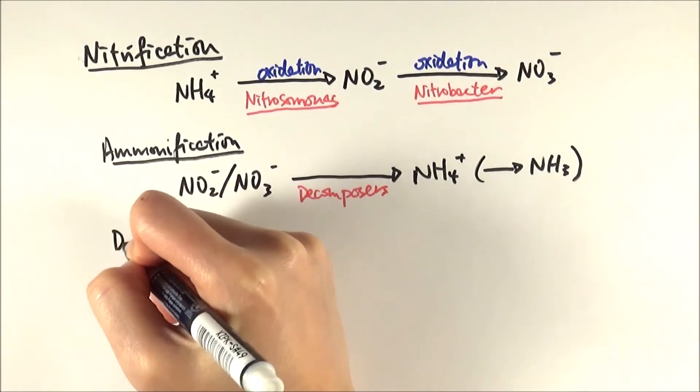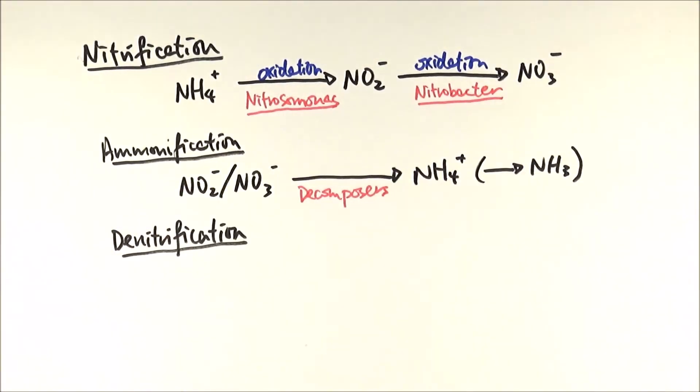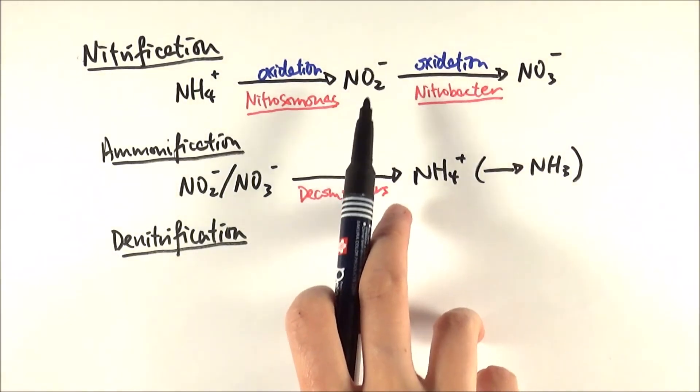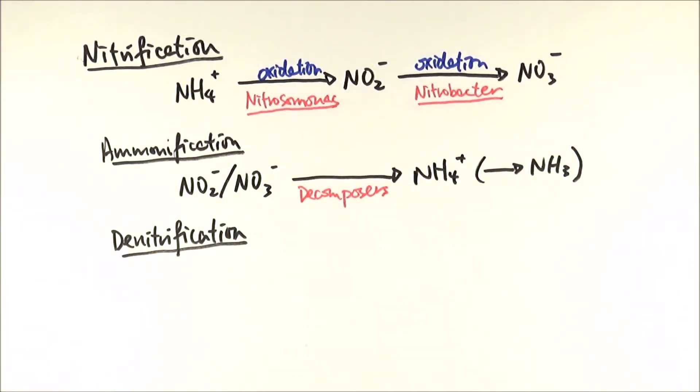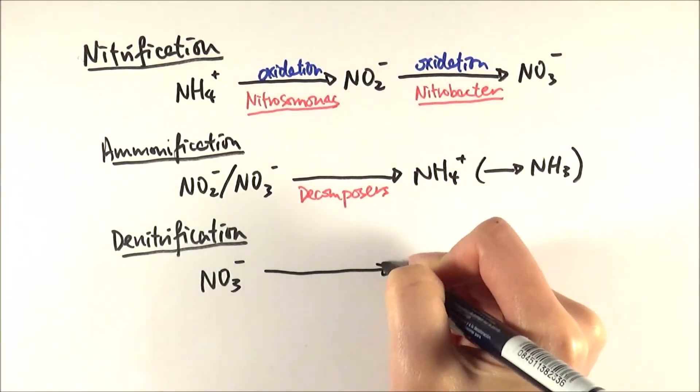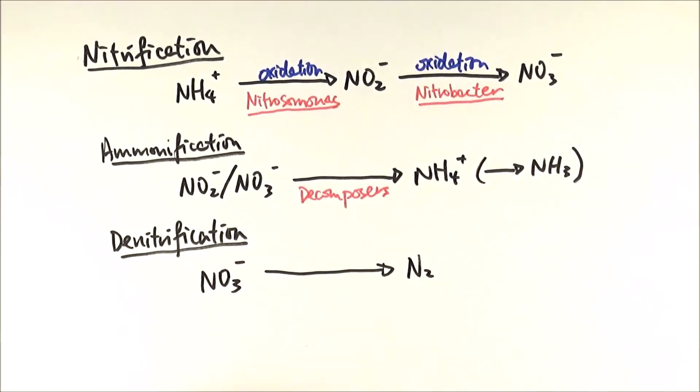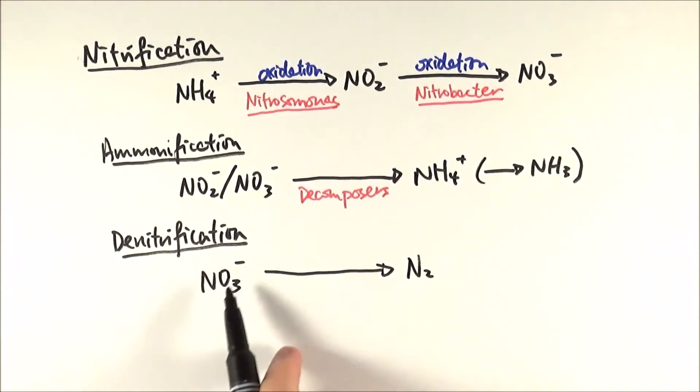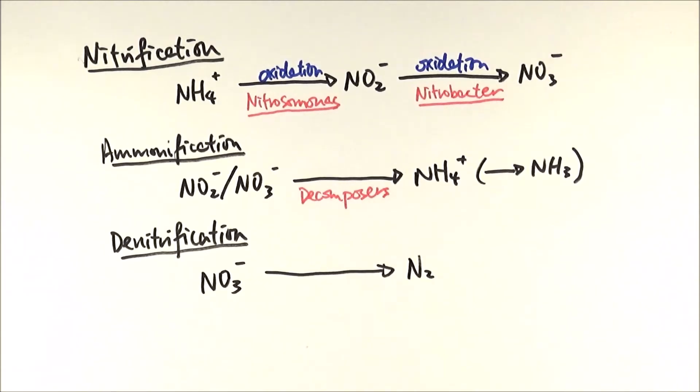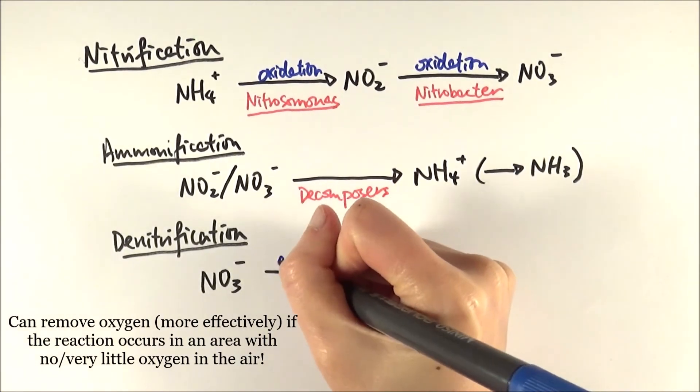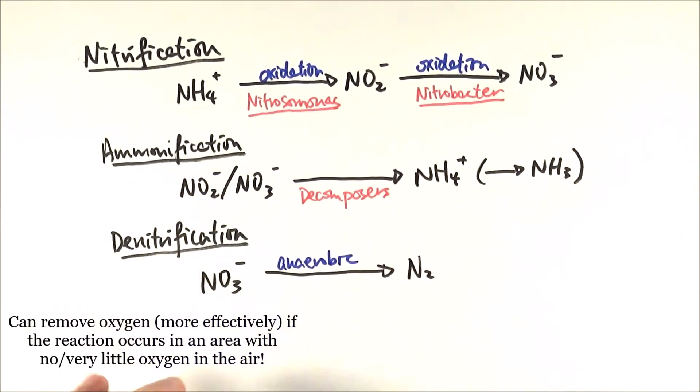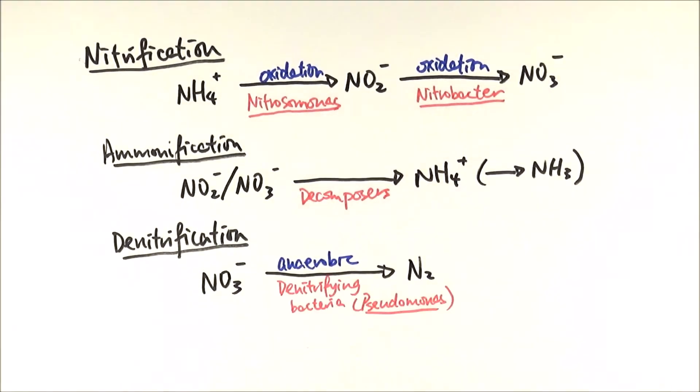Another reaction is called denitrification, and in this case, if we link it to nitrification, which is making nitrite or nitrate, denitrification is to remove that oxygen from the nitrite or nitrate. In this reaction, nitrate gets converted into nitrogen gas, which is N2. So it's removing the oxygen, denitrification. This particular reaction is anaerobic, meaning that it can only occur if there is no oxygen or very low levels of oxygen. And it is done by denitrifying bacteria such as pseudomonas. Again, making sure you need to know the name pseudomonas.